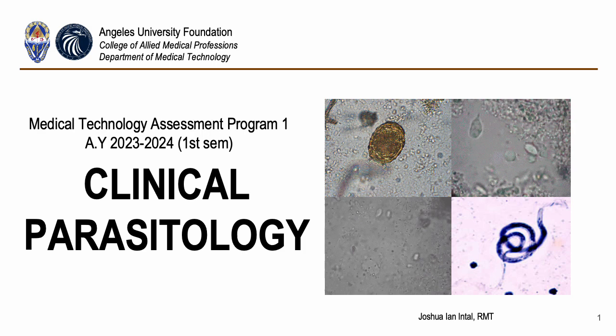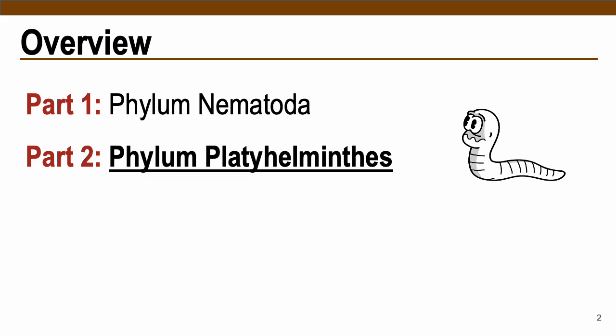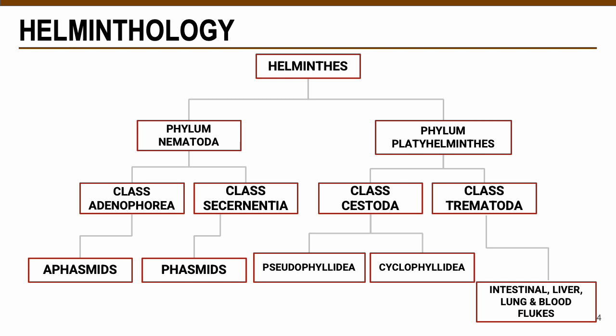Hello everyone and welcome to the second video of our MTAP for Clinical Parasitology. In this video we will talk about the Phylum Platyhelminthes. Platyhelminthes is comprised of two classes: Class Cestoda, which are your tapeworms divided into two categories — the Pseudophyllideans and the Cyclophyllideans. Class Trematoda, also known as flukes, are classified into several types based on the organs they invade: intestinal, liver, lung, and blood flukes. All of these will be discussed in this part 2 lecture video.